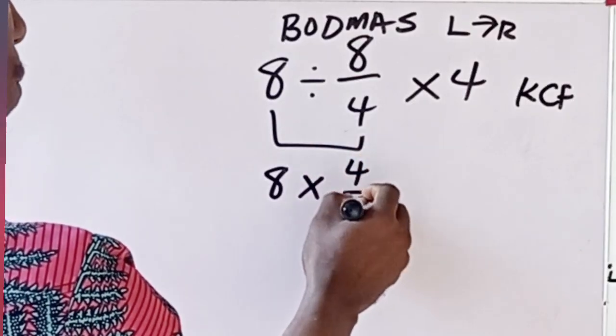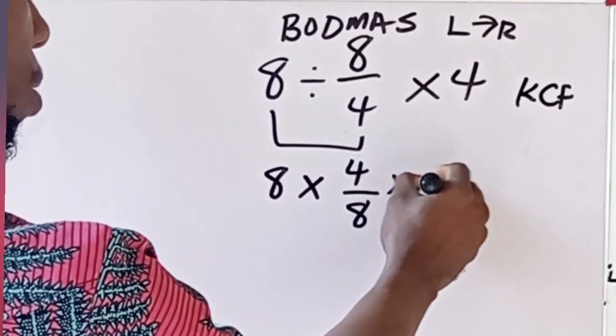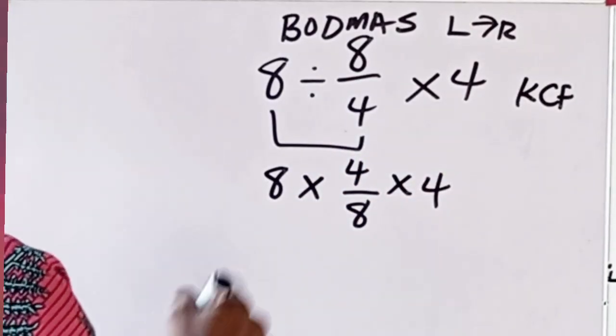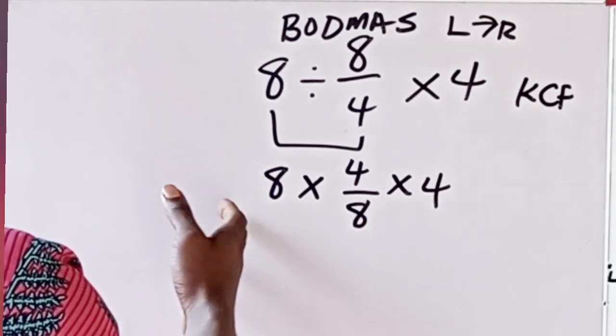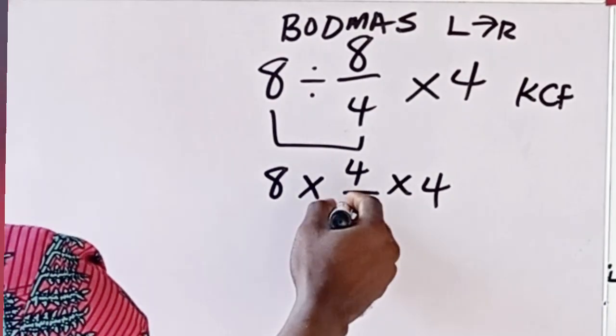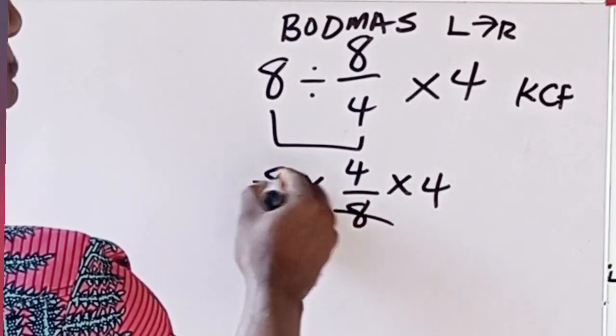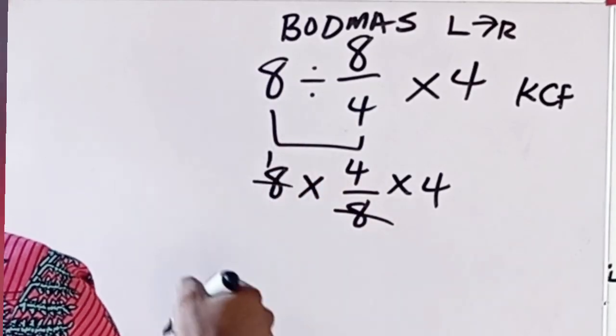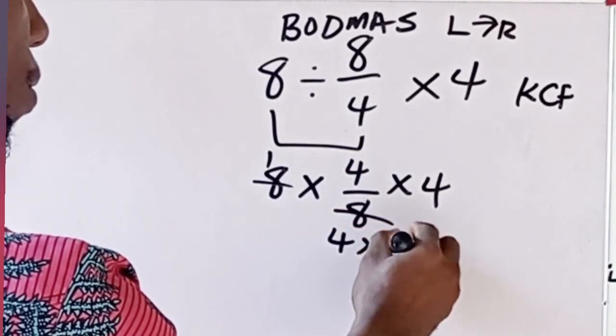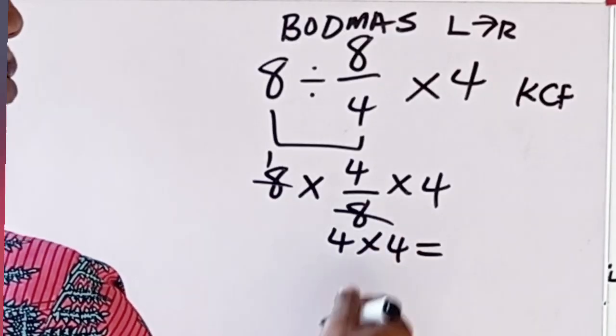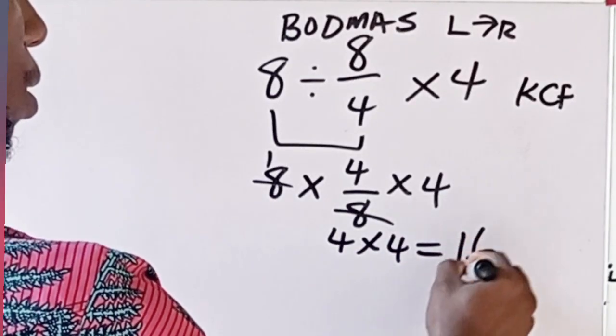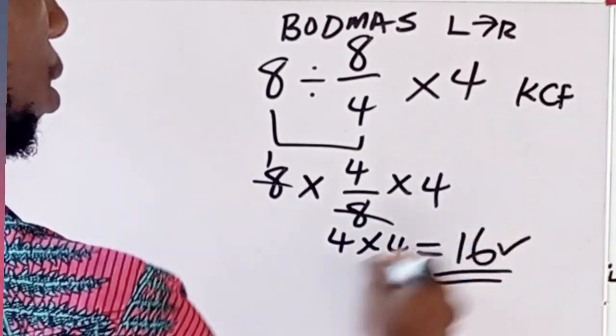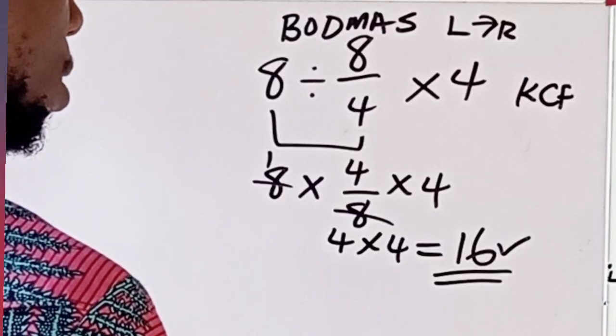Now we have two operators here, so we just solve from left to right. So 8, we cancel this 8, which is 1. We are left with 4 times 4. So 4 times 4 will give us 16, and this is our final answer.